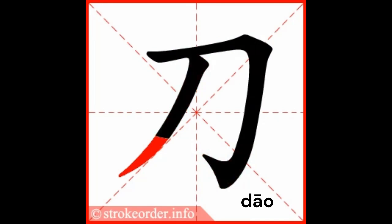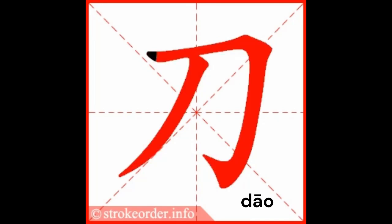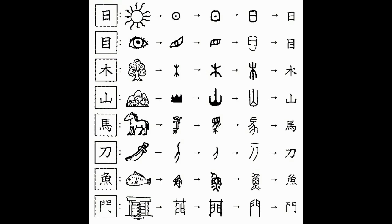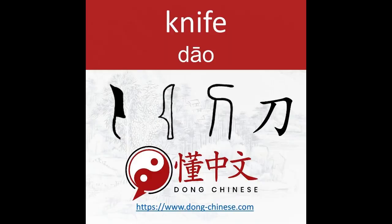This is otherwise known as a pictograph. In the Chinese language, about 4% of all characters are pictographs, which means the character evolved from pictures, the earliest of which were found on oracle bones.